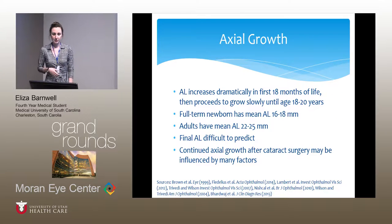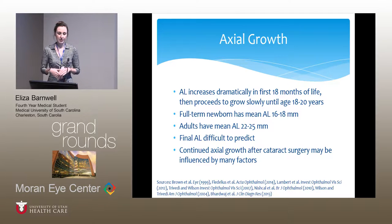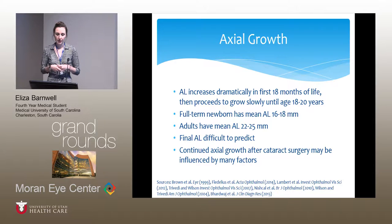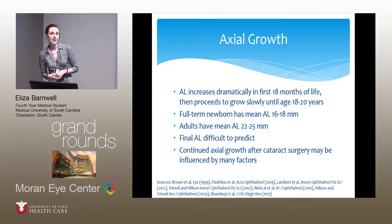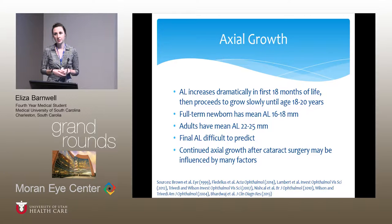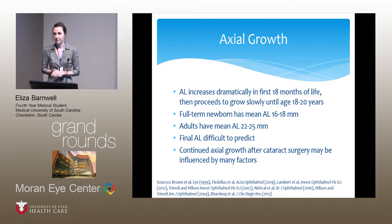What we know about axial growth is that it increases dramatically in the first 18 months of life, then proceeds to grow slowly until around age 18 to 20. Newborns have a mean axial length of 16 to 18 millimeters; adults have a mean axial length somewhere between 22 to 25. The final axial length is difficult to predict, and continued growth after cataract surgery can be influenced by many different factors, making it hard to know which IOL to implant.